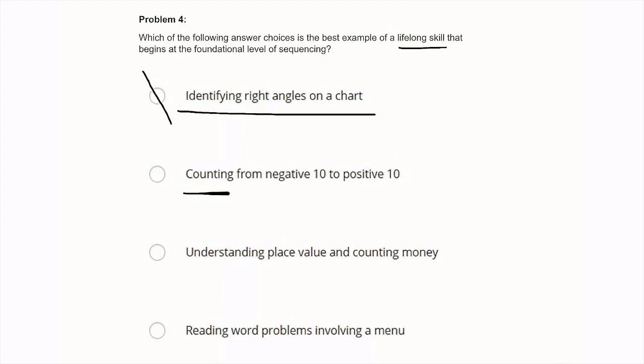The next one, counting from negative 10 to positive 10. Sure, that is something that I might do more often than identifying a right angle on a chart. And it does have to do with counting. So that has to do with the order of things and sequencing. So this might be a viable answer choice. We'll leave that as an option.